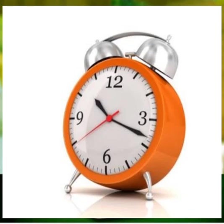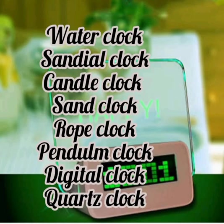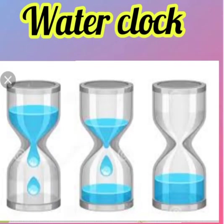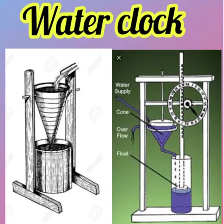Various clocks have been designed and used to measure time from different parts of the world, like the water clock, sundial clock, candle clock, sand clock, rope clock, and more. Have you seen those clocks? Ancient people used a number of clocks. The first one is the water clock.